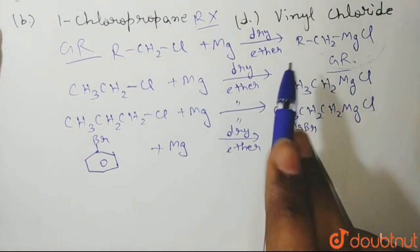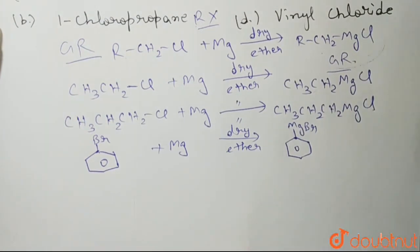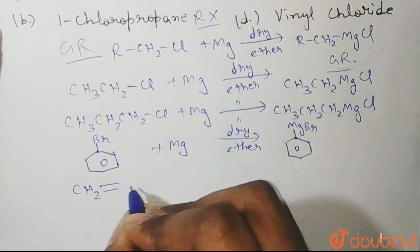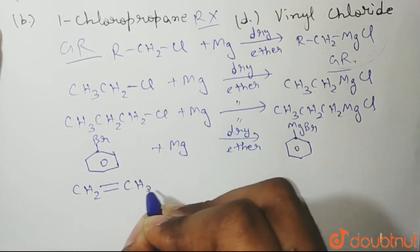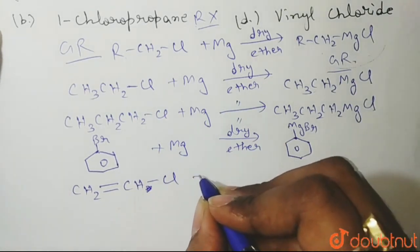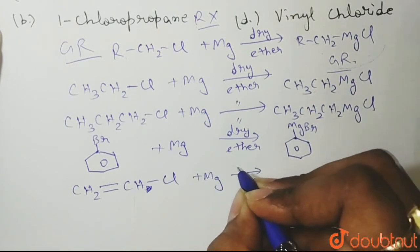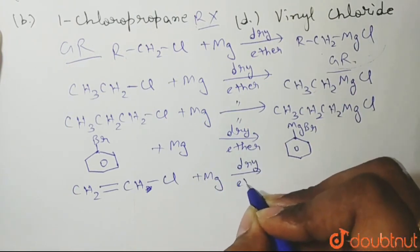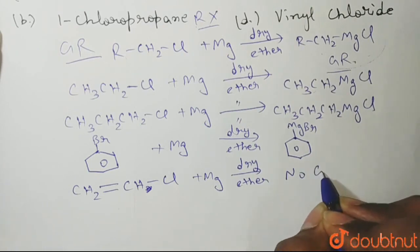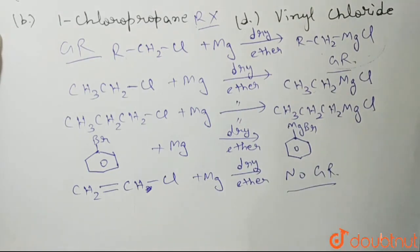But the last option is vinyl chloride. Now the structure of vinyl chloride is CH2 double bond CHCl. This is the structure of vinyl chloride. When we treat it with magnesium in presence of dry ether, no reaction occurs. No Grignard reagent formation occurs. Why not?